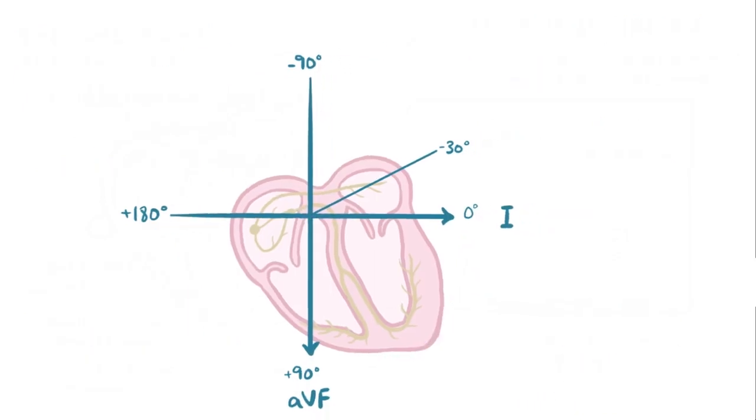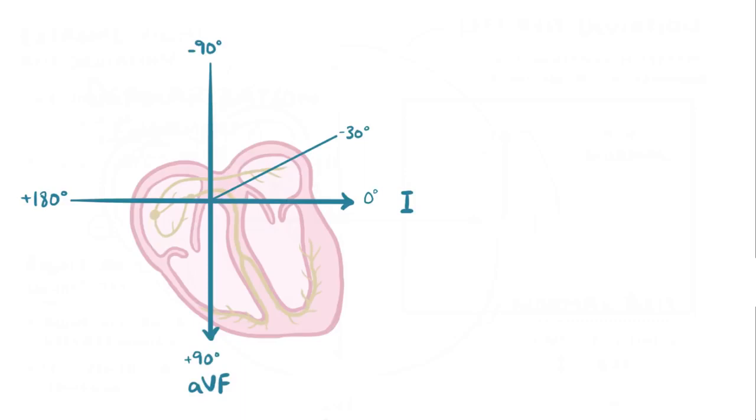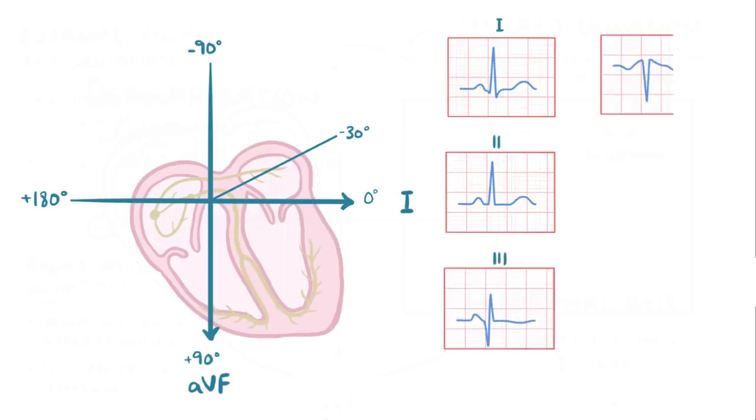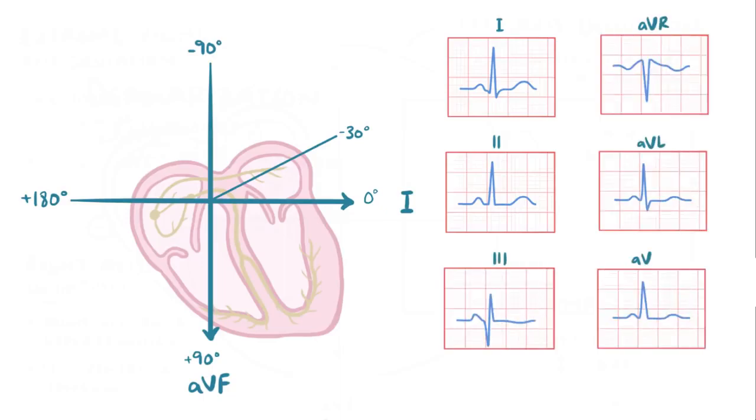Now you can figure out the QRS vector within about 30 degrees by looking at someone's ECG, specifically the 6 limb leads: lead 1, 2, 3, AVR, AVL, and AVF, corresponding to 0 degrees, plus 60 degrees, plus 120 degrees, minus 150 degrees, minus 30 degrees, and plus 90 degrees, respectively.